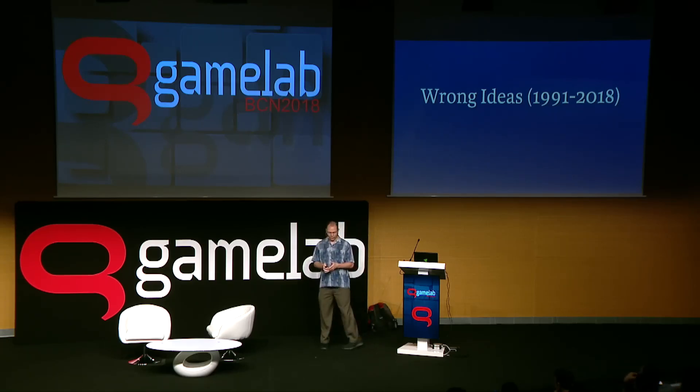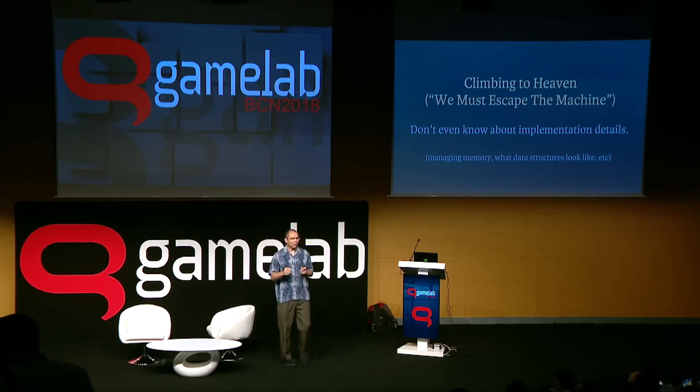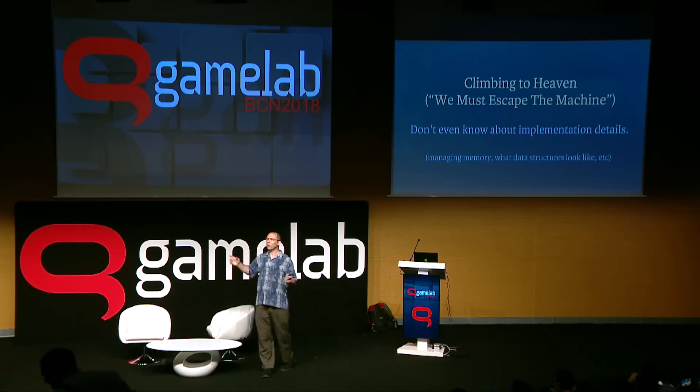I'm going to talk about some wrong ideas that have been happening for the past few decades, starting with maybe the most basic one. This is an attitude that came out of academic circles but has percolated through industry. It's an idea about what a language should help you do — it should help you be a more powerful and expressive programmer who can get more things done quickly. There's some idea like climbing to heaven where the language lets you express higher and higher level things and we don't care about implementation details, like where memory comes from or how much time things take, because implementation details are complicated and slow you down.